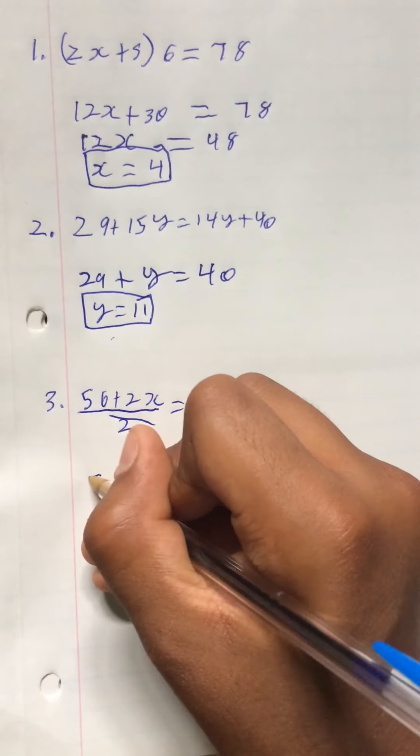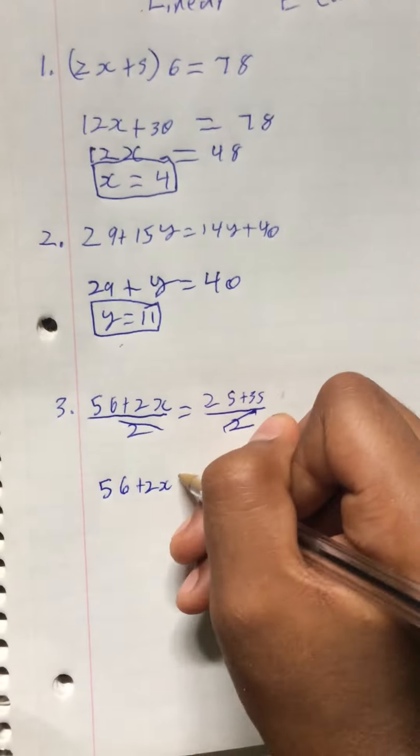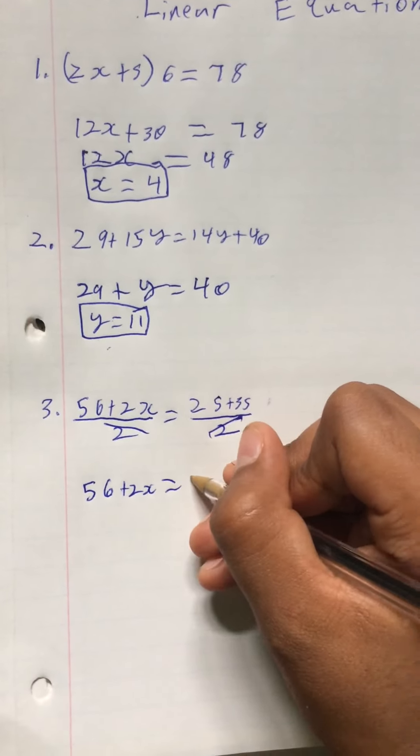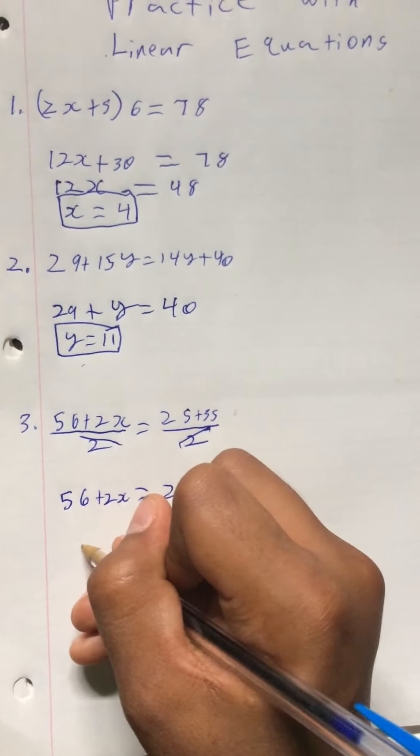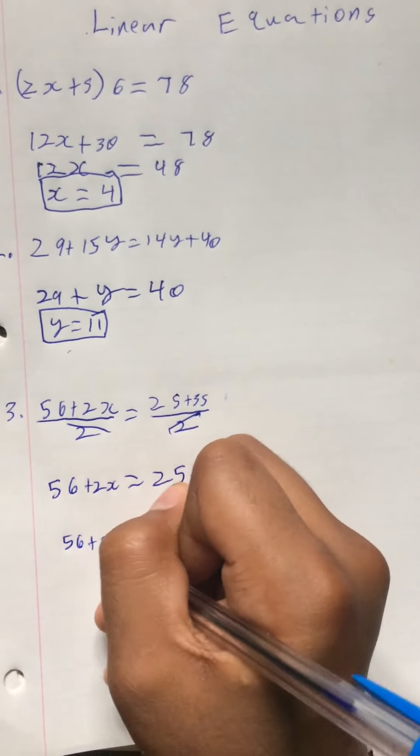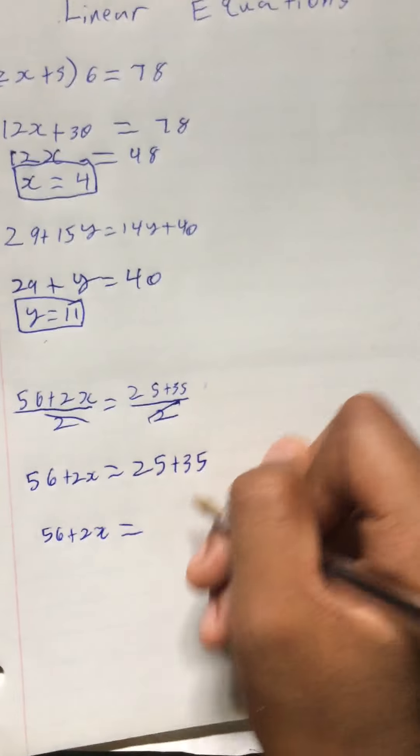Then now there's 56 plus 2x equals 25 plus 35. Then 56 plus 2x would equal 60.